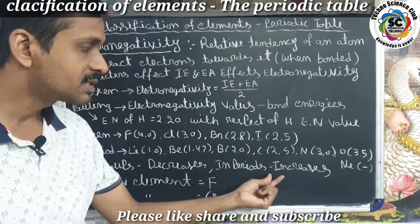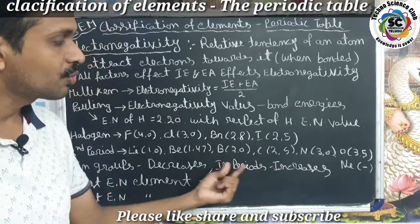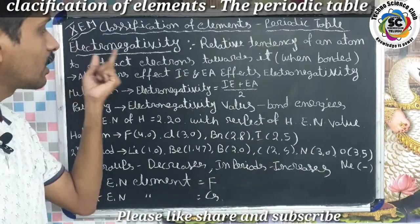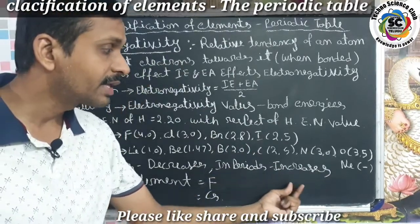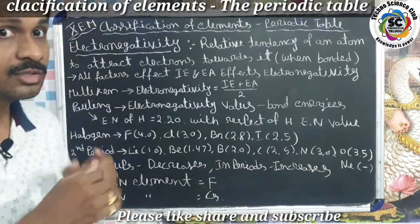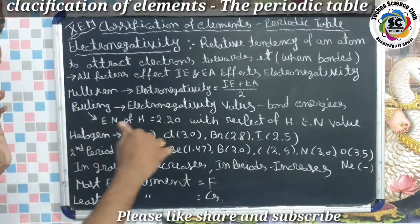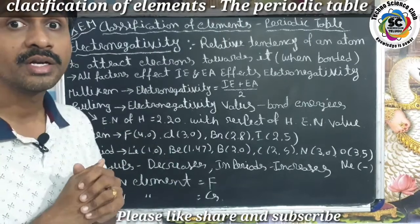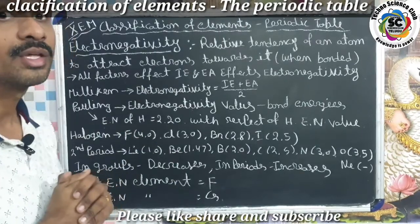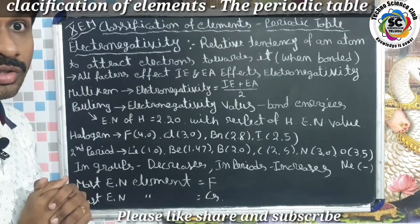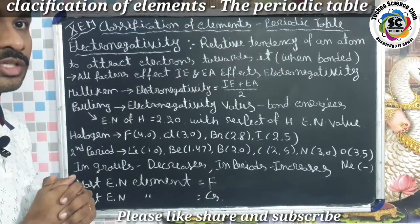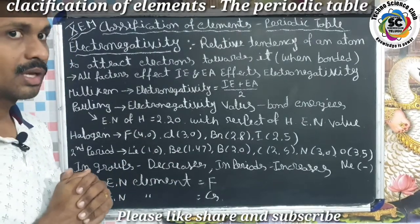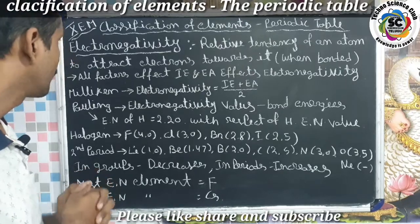In periods, from left to right, the electronegativity value increases. So in periods, going from left to right, electronegativity increases.